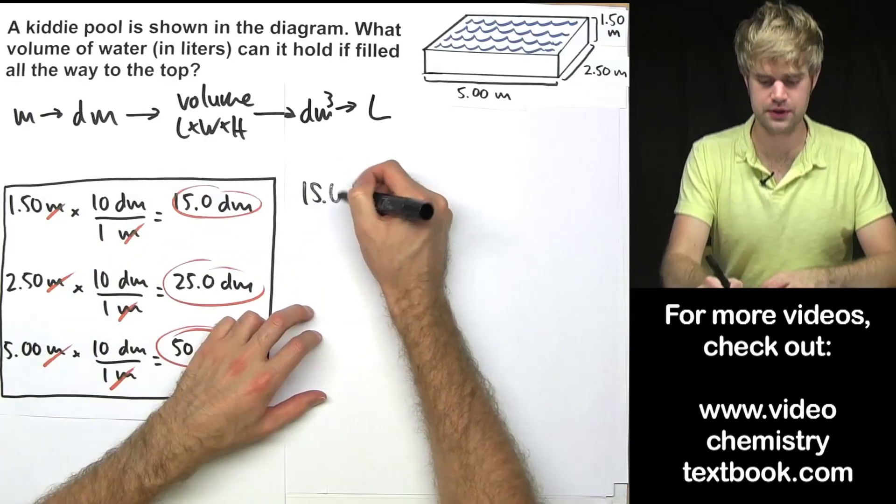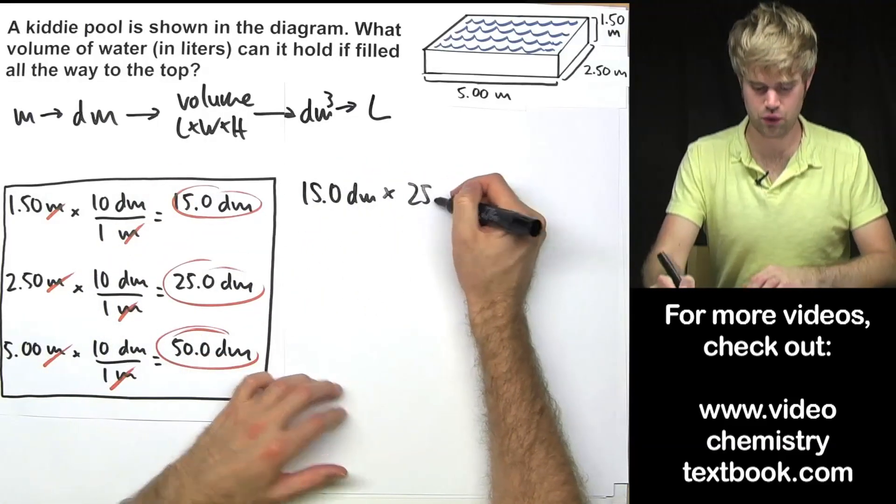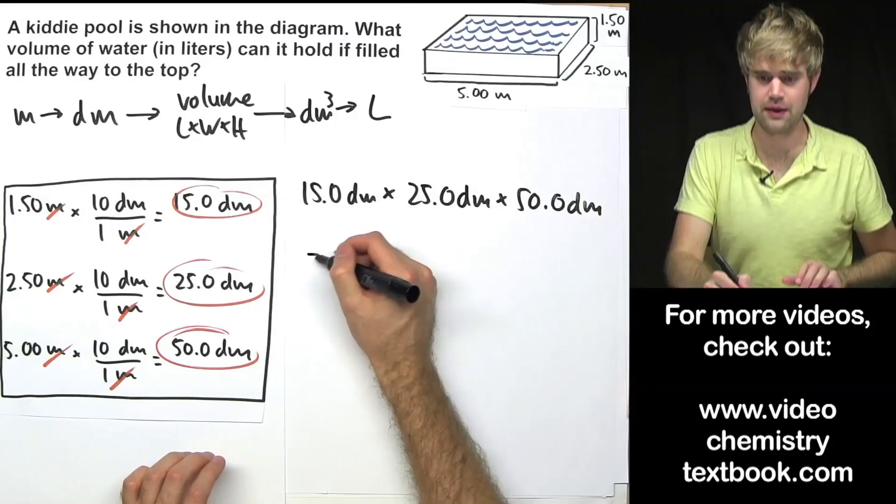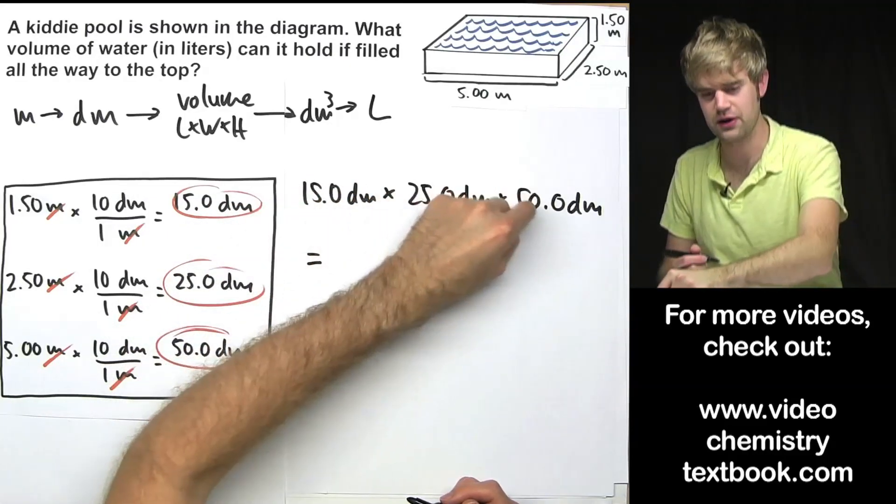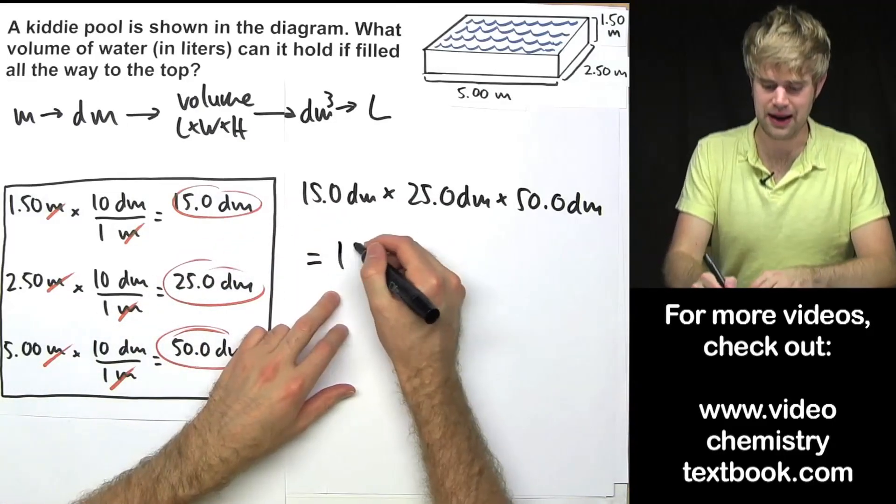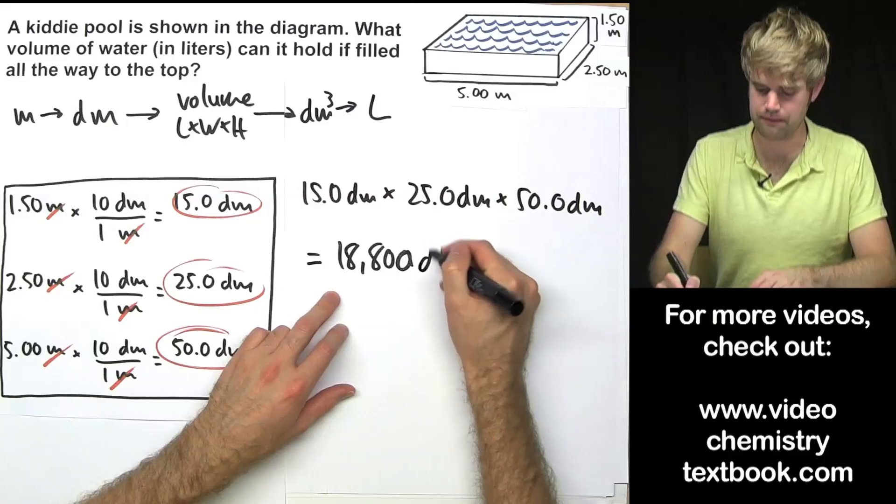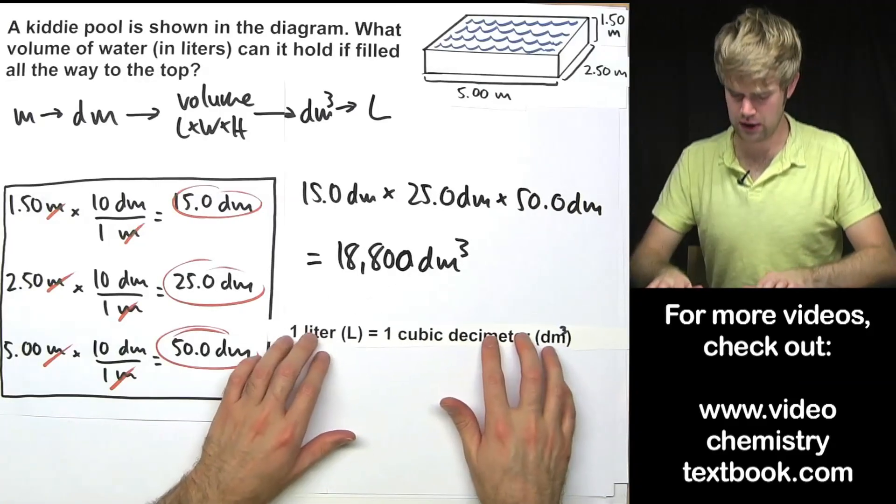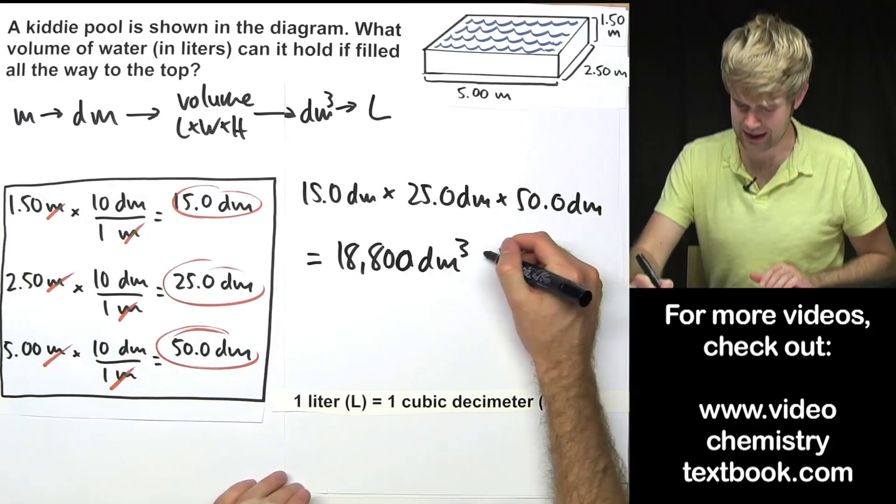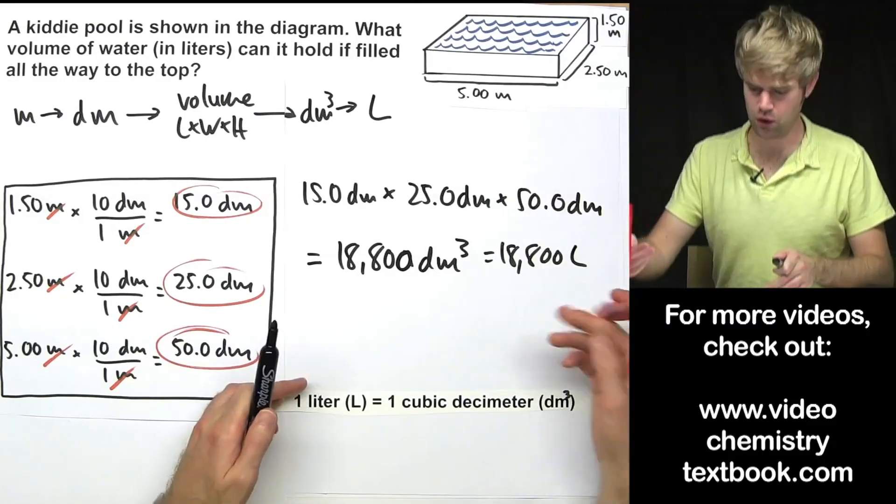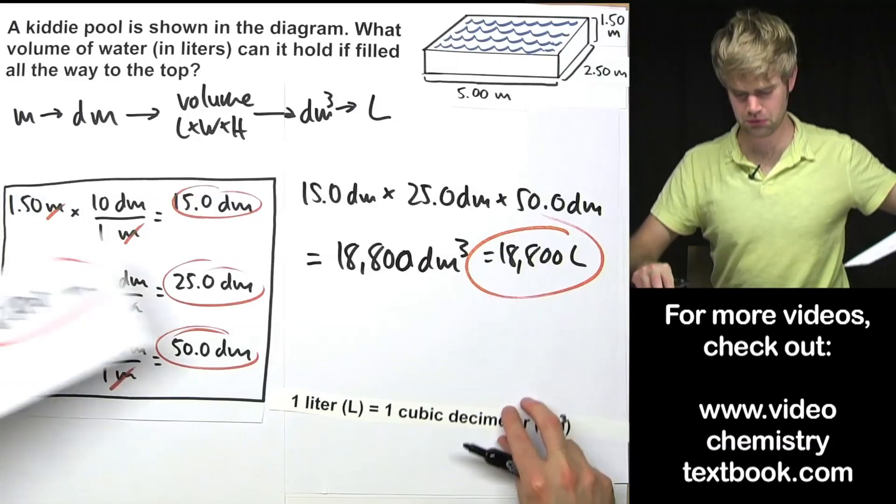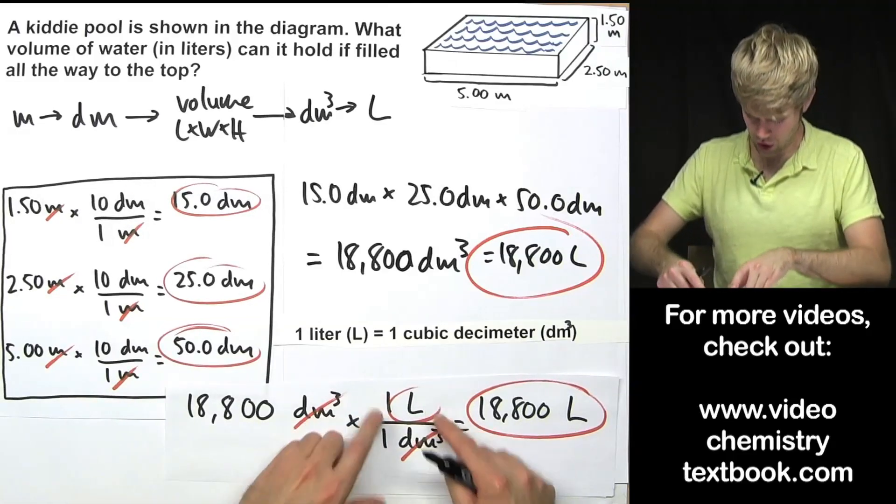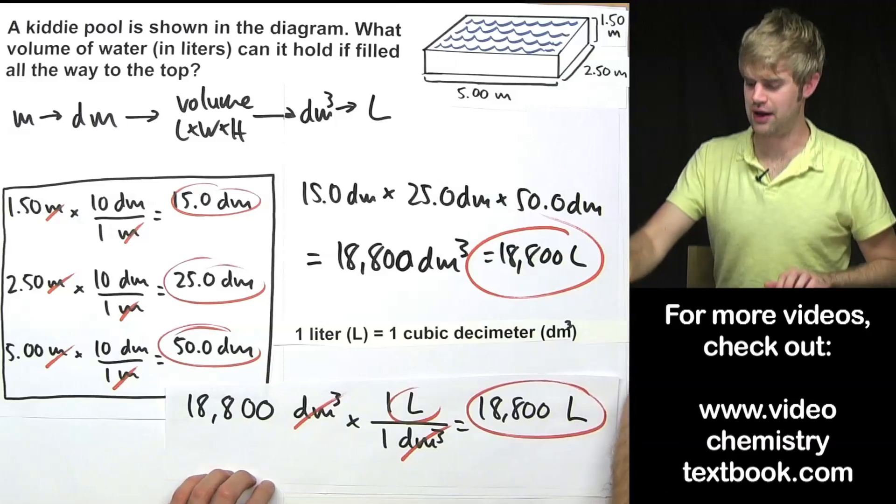Now my lengths are all in decimeters and I can move on to this step of calculating the volume. I'll do 15.0 decimeters times 25.0 decimeters times 50.0 decimeters and that will give me, rounded to three significant figures because there are three significant figures in each of the numbers I'm starting with, I'm going to get 18,800 cubic decimeters. And as we said, one liter is the same as one cubic decimeter. So I can just write this in liters or if you want to be really fancy, you can write the whole conversion factor based on this statement here, one liter over one cubic decimeter, cancel out the cubic decimeters and you're left with liters.